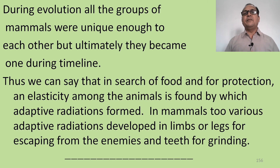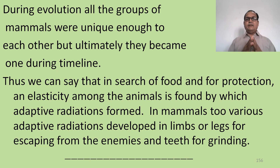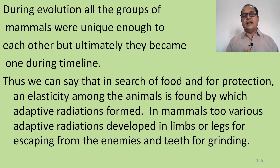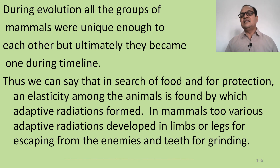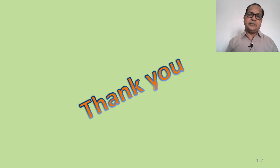During evolution, all groups of mammals were unique from each other but ultimately became connected over time. In conclusion, in search of food, for protection, and for adaptability among animals, adaptive radiations formed — or divergent evolution occurred. In mammals, two major adaptive radiations developed: modifications in limbs or legs for escaping from enemies, and modifications in teeth for grinding food. This is all about adaptive radiations in mammals.